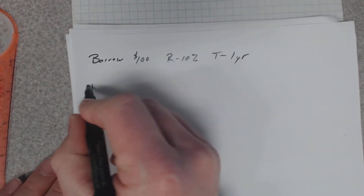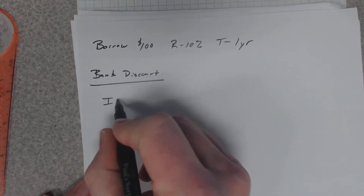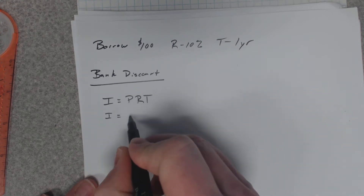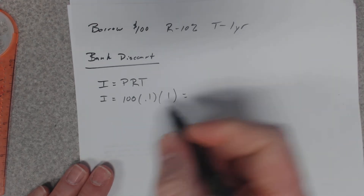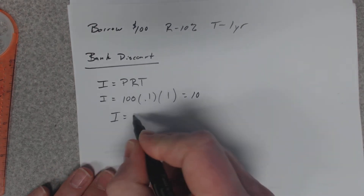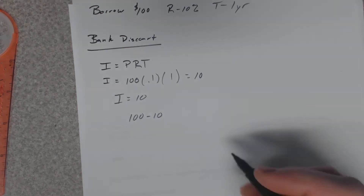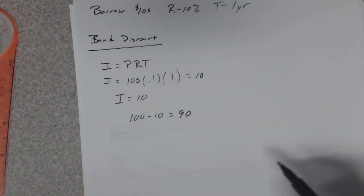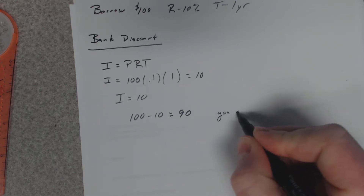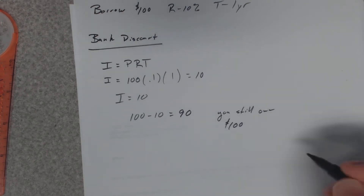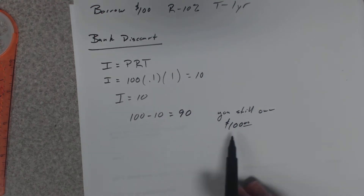For a bank discount, you use simple interest: I equals PRT. The interest is the principal of $100 times the rate of 0.10 times one year, which equals $10. Here's what happens: you say you need to borrow $100, but the bank takes away the $10 interest upfront, pays themselves first, and you walk out of the bank with only $90. But you still owe them $100.